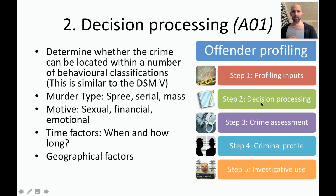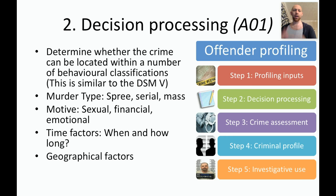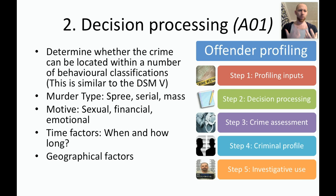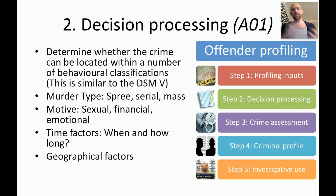Step two is decision processing. This is where we determine whether the crime can be located within behavioral categories. These behavioral classifications are very similar to those we see in the DSM — if they have all these characteristics then they have OCD, if they have all these then they have depression. We're doing the same thing here with crime: if a murder has these characteristics it's this type of murder, if it has these it's this.